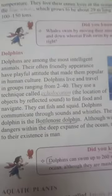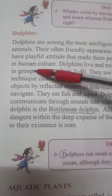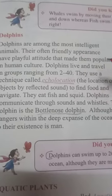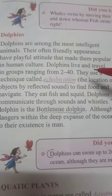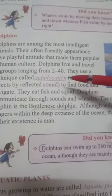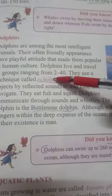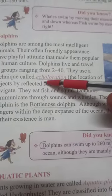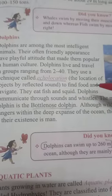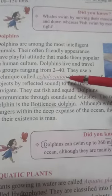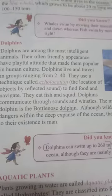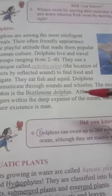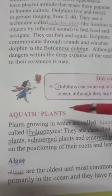Dolphins are the second type of aquatic or marine mammals. Dolphins are also intelligent and friendly animals. Many people play with them, and they can form groups of 2 to 40 members. They use a special technique for communication called echolocation — they produce specific kinds of sounds by which other members can listen and join the group.